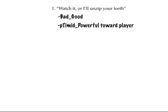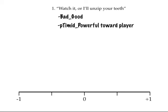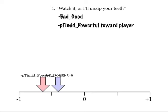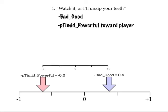Let me show you how it's done. Let's return to our example with Joe. We've decided to use Joe's Bad Good value and his P Timid Powerful value towards the player to decide whether he'll take option number one. Here's how we'll use blend. Let's make up some values: we'll put his P Timid Powerful value at minus 0.6 — Joe thinks the player is a really timid guy. And Joe's Bad Good value is minus 0.4, but we have to use the negative of his Bad Good value. Using a weighting factor of 0.5, this yields a final result of 0.1.